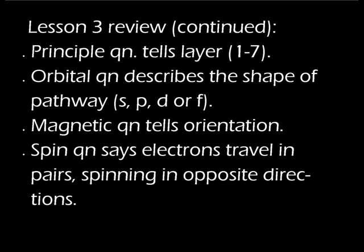The third quantum number, the magnetic quantum number, told the orientation in space of the pear-shaped orbits along the x, y, or z axes. The fourth quantum number, the spin quantum number, told that the electrons travel in pairs when possible, with one electron spinning clockwise and the other spinning counterclockwise. Turn now to the practice page at the end of lesson three and complete that.